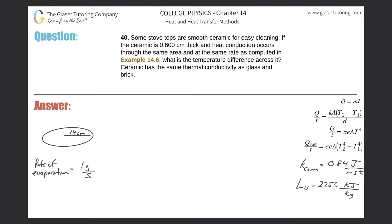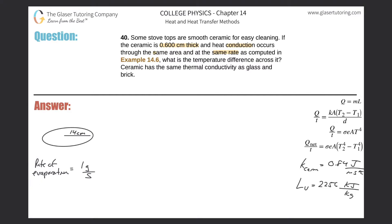Problem number 40: some stovetops are smooth ceramic for easy cleaning. If the ceramic is 0.6 centimeters thick and heat conduction occurs through the same area and the same rate as computed in example 14.6, what is the temperature difference across it? Ceramic has the same thermal conductivity as glass. We need to look up those values. The area was given by knowing the radius, the rate of heat conduction is given in terms of the rate of evaporation, and the remaining values come from tables.